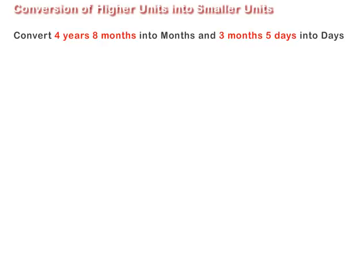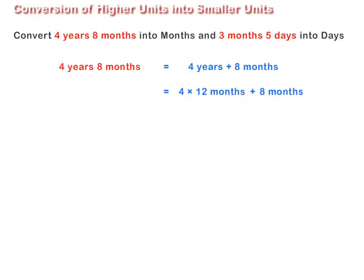And 3 months 5 days into days. Here, 4 years 8 months equal to 4 years plus 8 months, equal to 4 multiplied by 12 months. So 48 months plus 8 months are equal to 56 months.